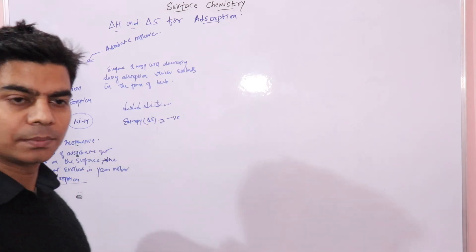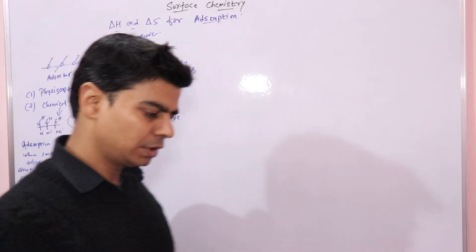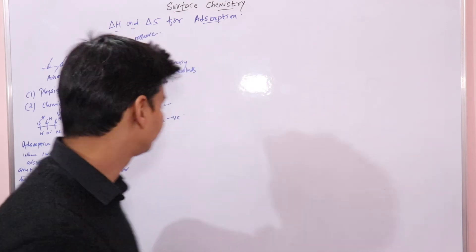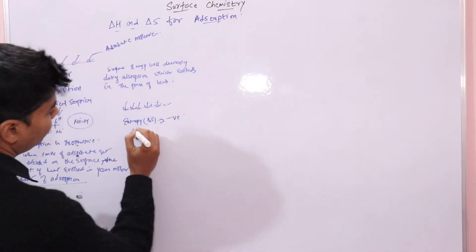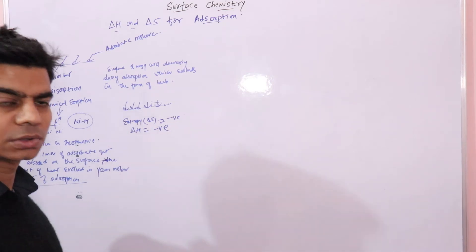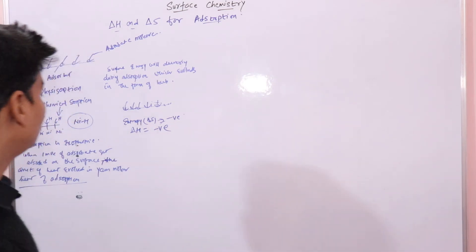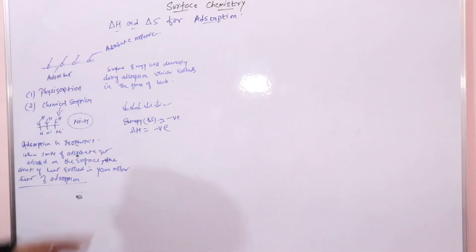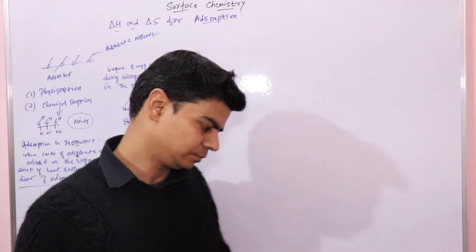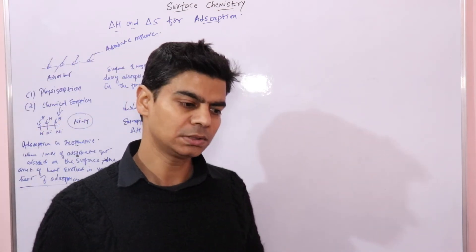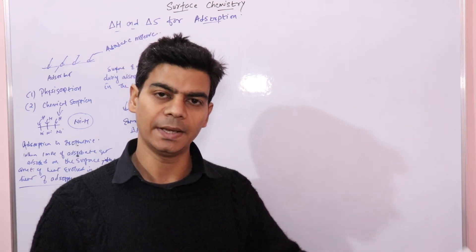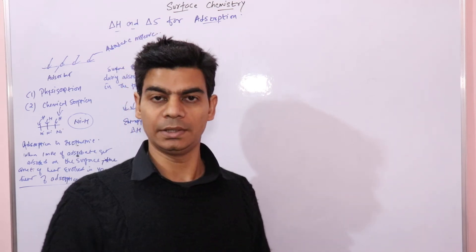Since adsorption is an exothermic process, ΔH is negative. Adsorption takes place spontaneously — if you place a metal surface in air, it will itself start adsorbing gases. Since it is a spontaneous process, ΔG is negative.